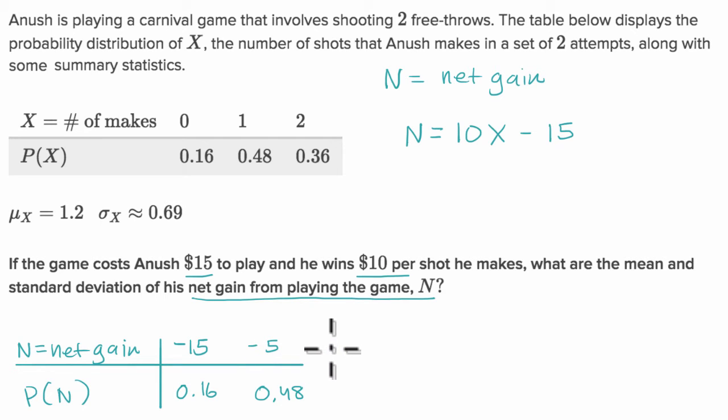And then last but not least, when X is two, his net gain is going to be positive five. Plus five. And so this is a 0.36 chance.